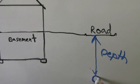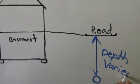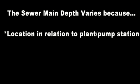So we've mentioned that the depth of the sewer main pipe under the road varies, but why does it vary? First, the main pipe runs by gravity to the sewer treatment plant. So the farther away your home is from the treatment plant, the shallower the pipe will be.